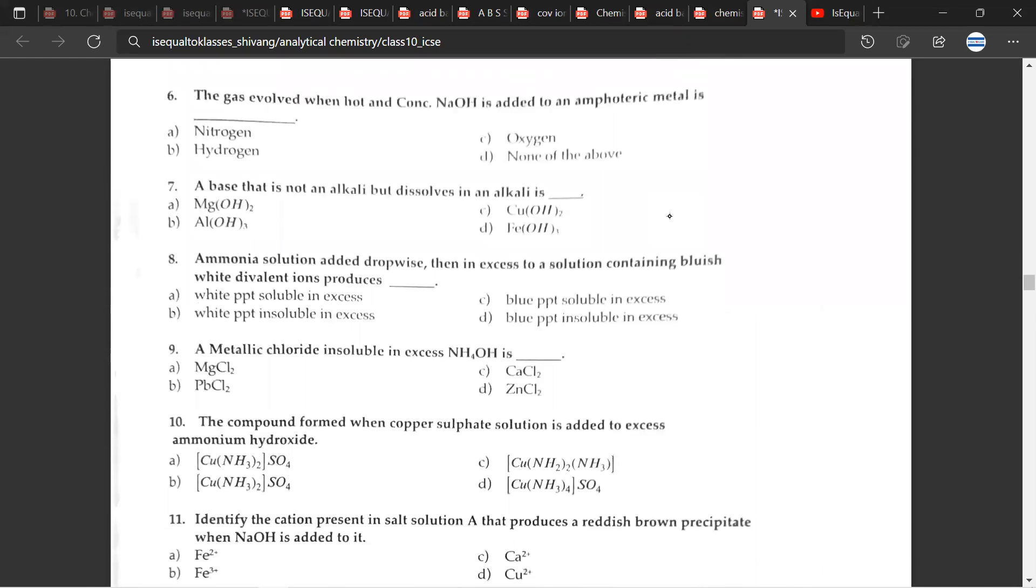Now, the sixth question, the gas evolved when hot and concentrated sodium hydroxide or NaOH is added to an amphoteric metal is dash. So the correct answer would be B, hydrogen. The seventh question, a base that is not an alkali, but dissolves in an alkali is B, aluminum hydroxide.